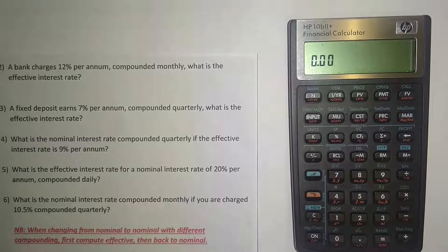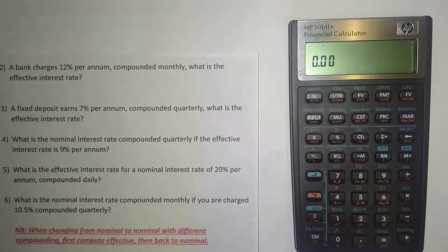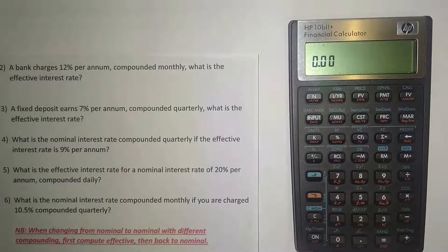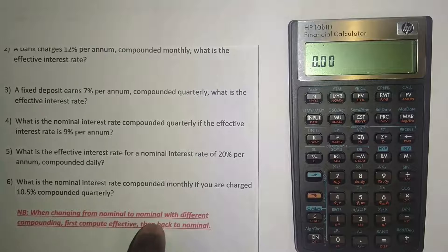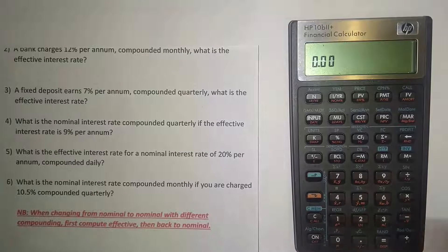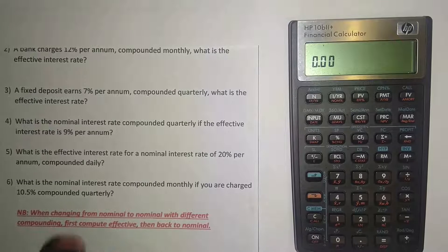Example six: what is the nominal interest rate compounded monthly if you are charged 10.5% compounded quarterly? Here we are moving from nominal to nominal. Being charged 10.5% compounded quarterly is a nominal rate, and we want the nominal interest rate compounded monthly. The key note here: when changing from nominal to nominal with different compounding, first compute the effective rate, then convert back to nominal. So we go from 10.5% compounded quarterly to effective, then from effective back to monthly nominal.